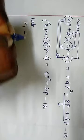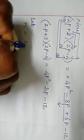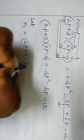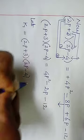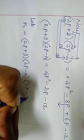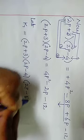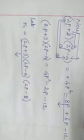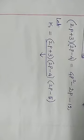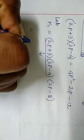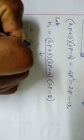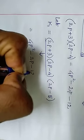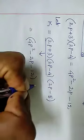Let k equal to (2p plus 3) into (2p minus 4) into (2p minus 5). The final answer - I will tell you - is equal to (4p squared minus 2p minus 12) into (2p minus 5).